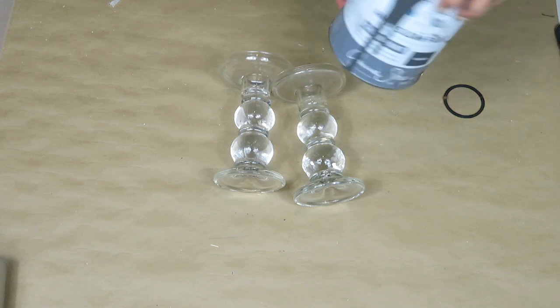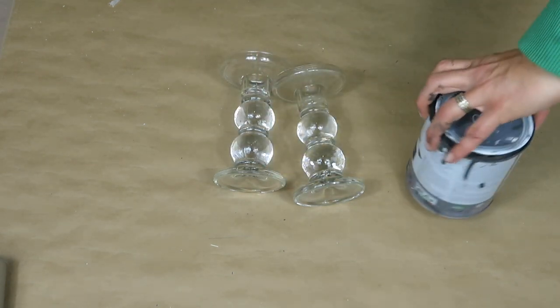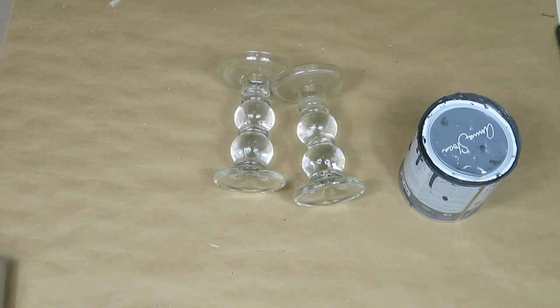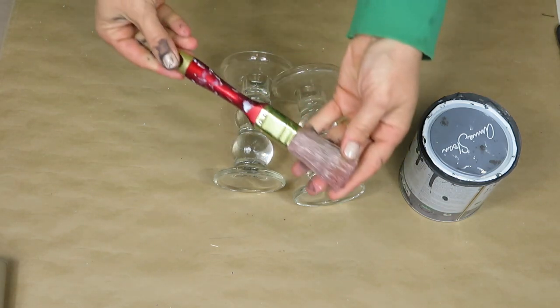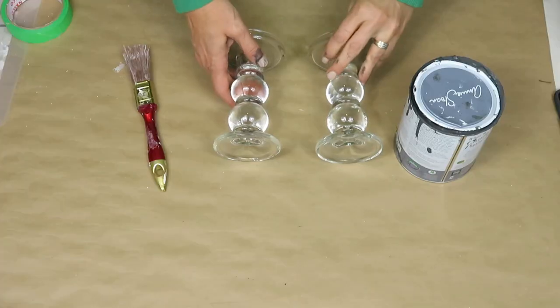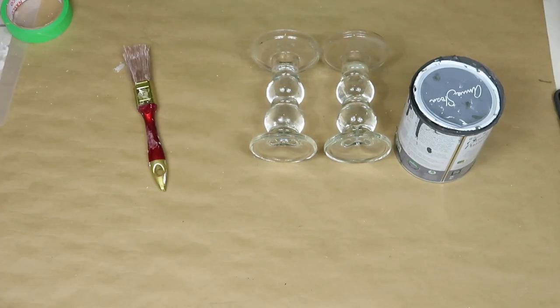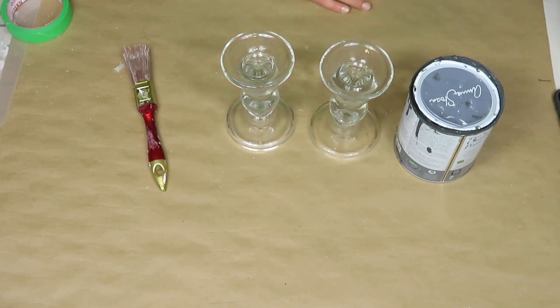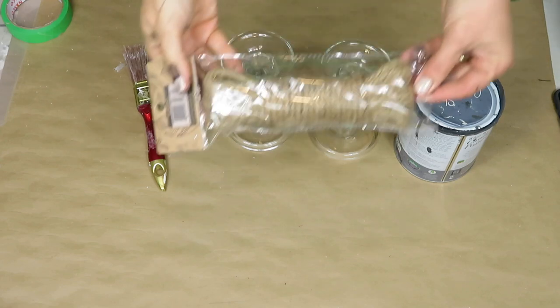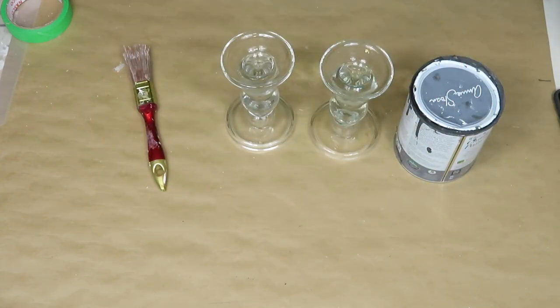I'll also be using some chalk paint. I am using Graphite by Annie Sloan and also some nautical rope and hot glue. I love using Annie Sloan paint for painting my furniture, so this is the stuff that I have on hand.